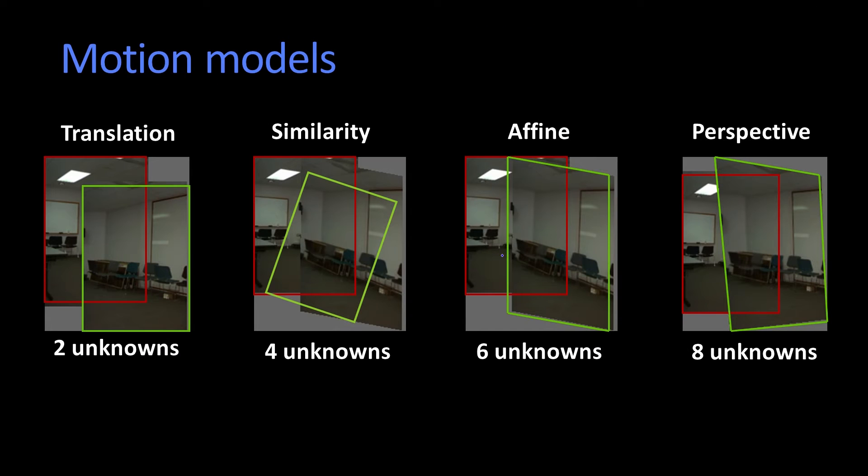So we have a very simple transformation—we basically go from the red to the green. So if we have a translation, right, so this thing just moves that way. And in a translation, how many unknowns are there?